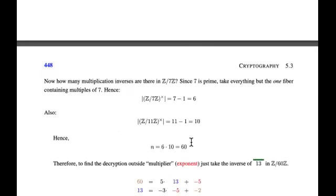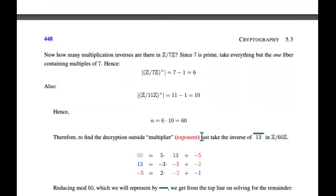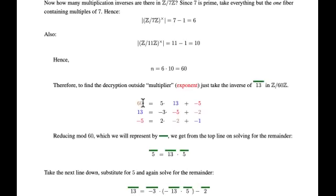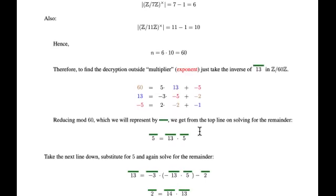So N is 60. Now let's suppose we have an exponent key for encryption. Suppose we want to encrypt by raising something to the 13th power, but remember the exponent 13 lives mod 60. So to find the decryption exponent, you simply take the inverse of 13 in mod 60 arithmetic. Here's an example of using the Euclidean algorithm and working through that.